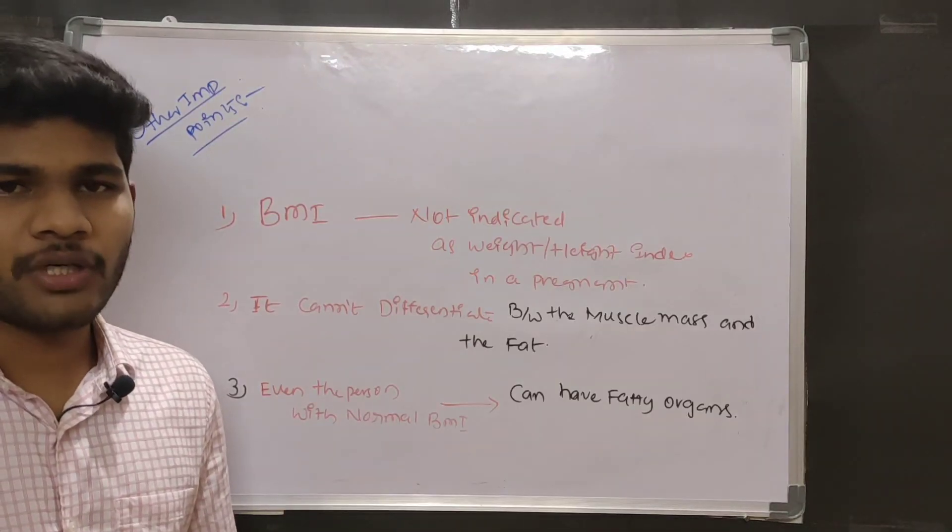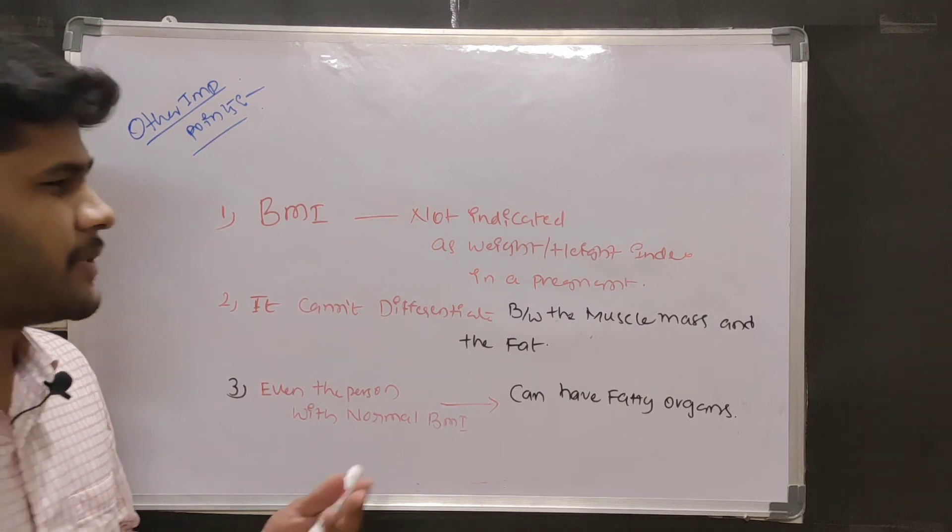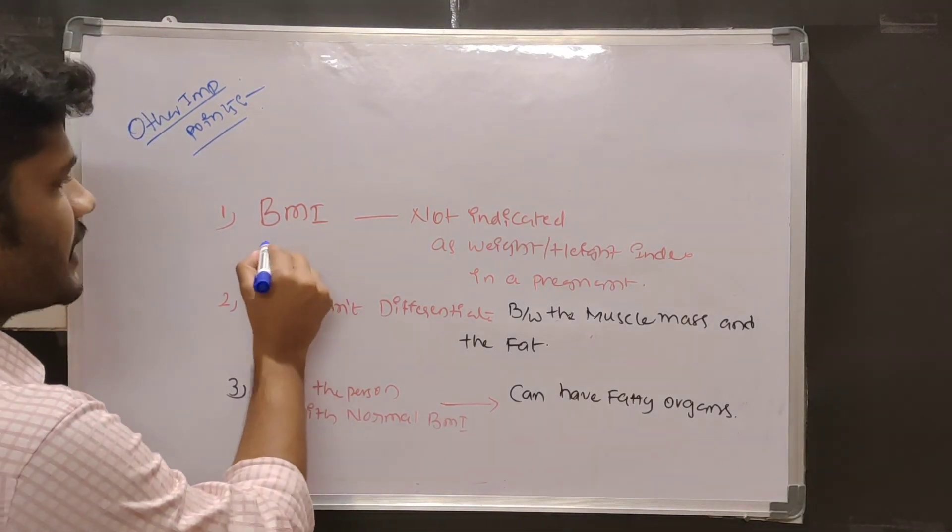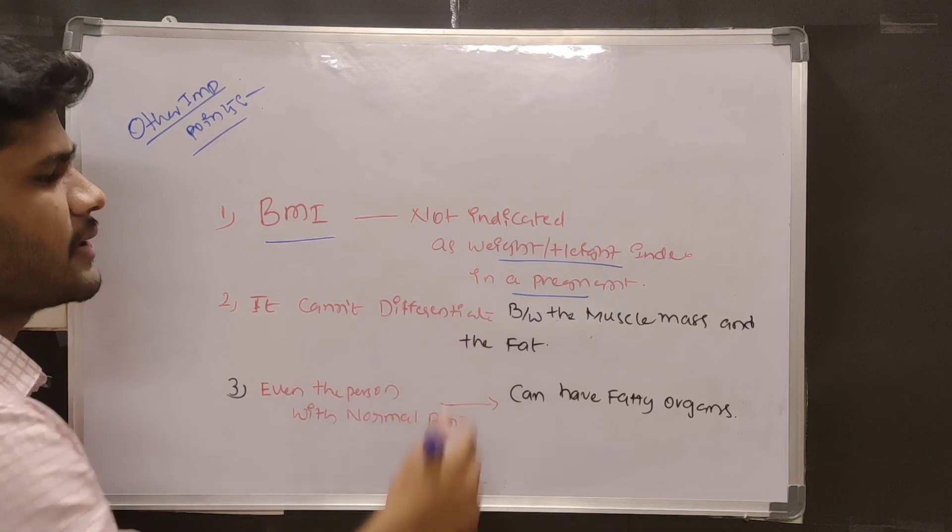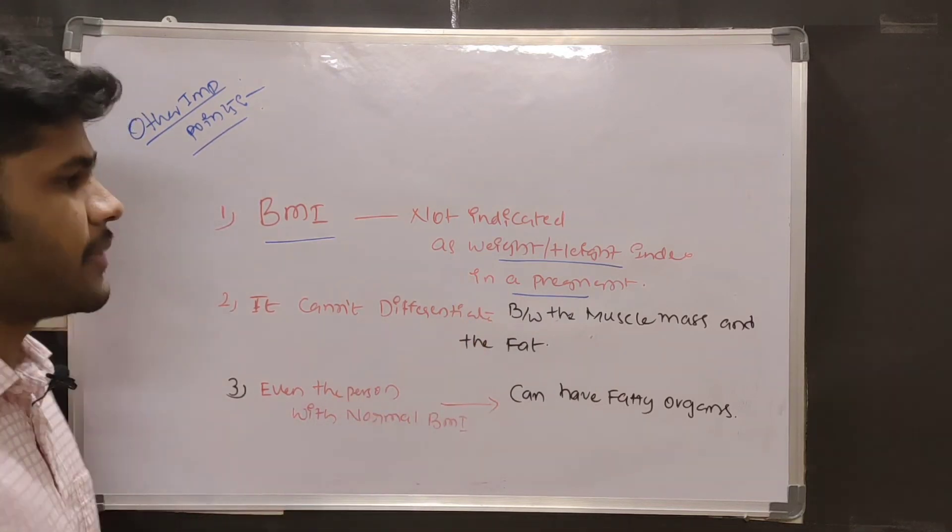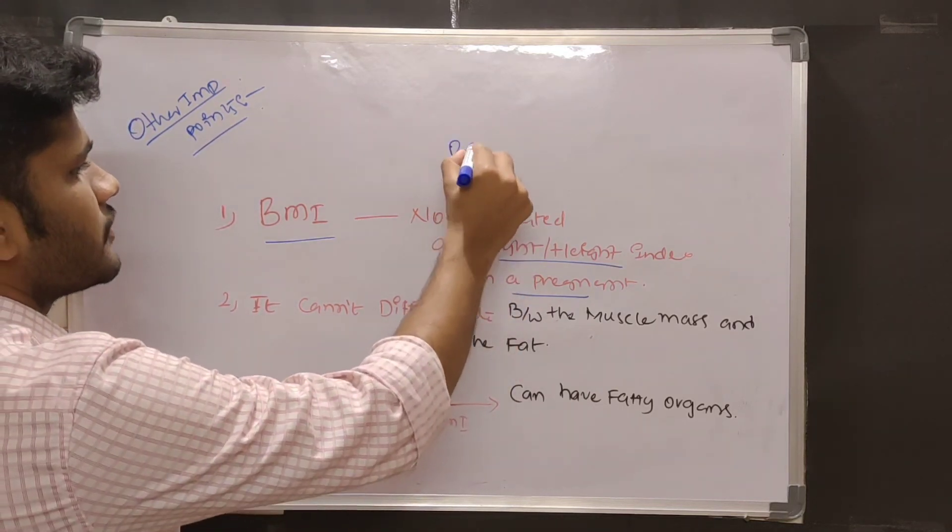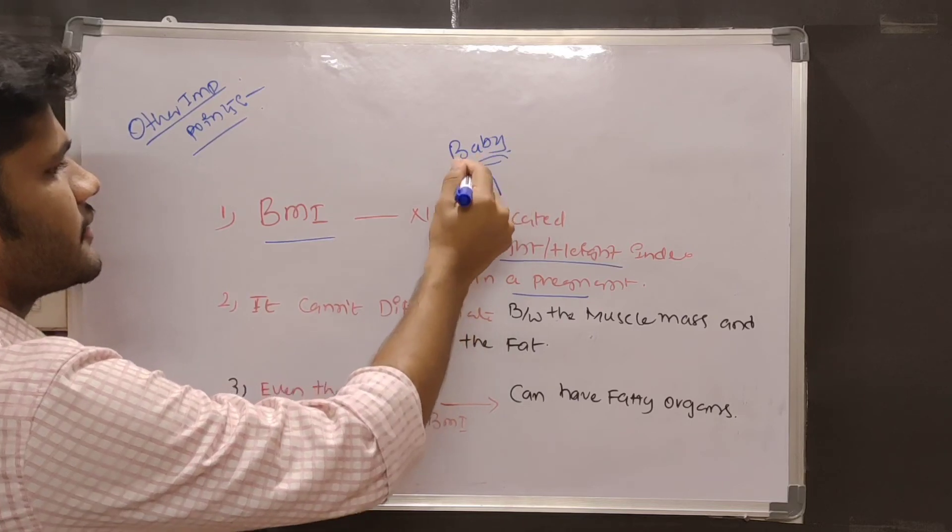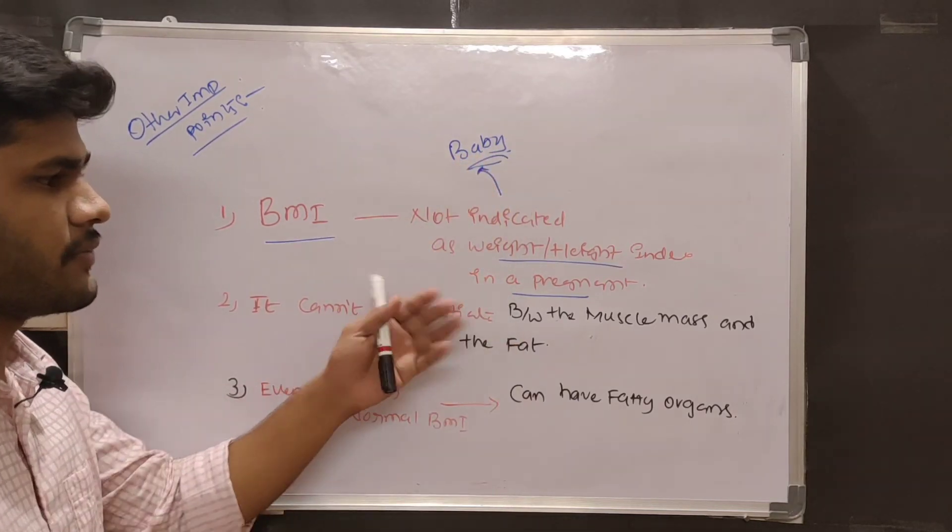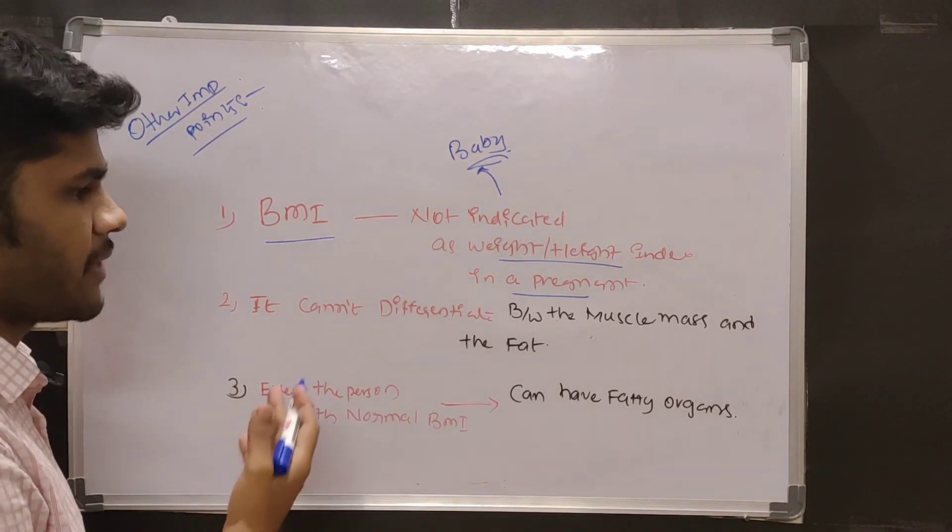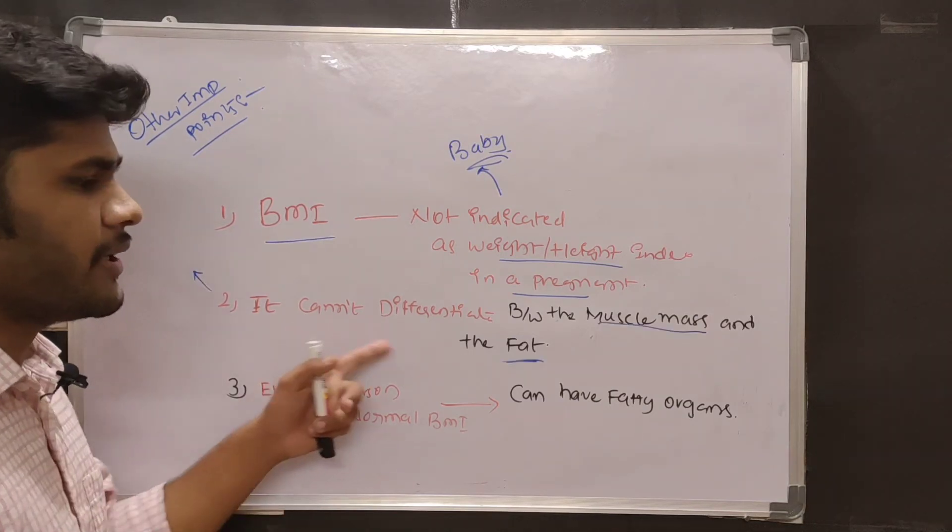Some important points to remember in BMI: BMI is not indicated as a weight for height index in a pregnant woman, since the pregnant woman is carrying a baby inside the womb. So we should not consider it as an index of weight for height in a pregnant woman.